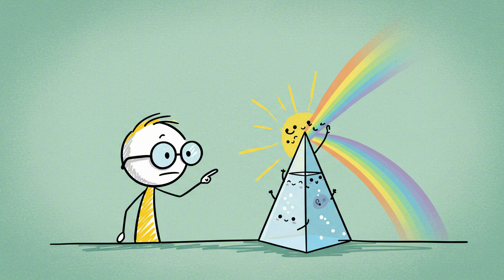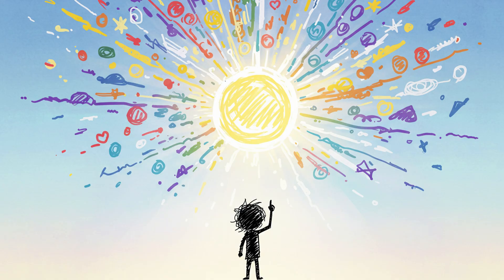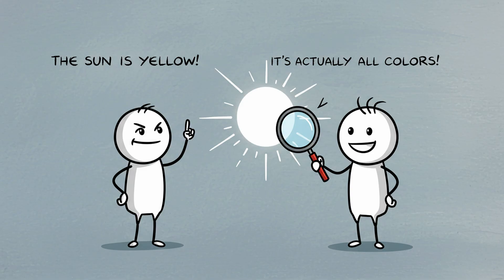But when sunlight hits Earth's atmosphere, blue wavelengths scatter more strongly, leaving the yellows and reds behind. That's why it appears golden from down here. It's the same reason sunsets blush red, and midday light feels clean and white. The color of the sun isn't a property of the sun. It's a product of perspective.